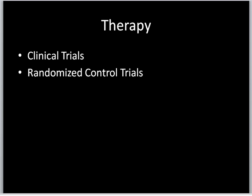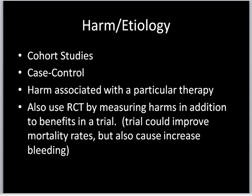Therapy articles are often what you find in clinical trials or randomized control trials, so if you have a therapy question, these are the types of articles you want to look for. If you have a harm or etiology question, you might look for cohort studies or case control studies to examine harm associated with a particular therapy. You can also use randomized control trials by measuring the harms in addition to the benefits of the trial.